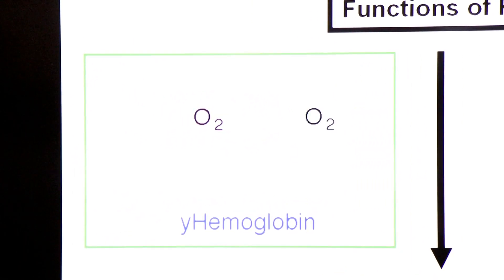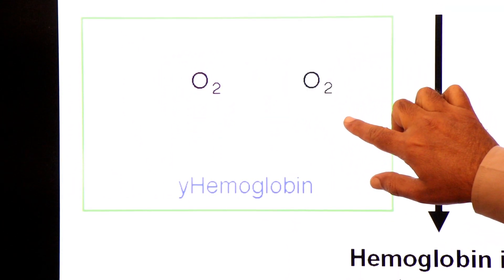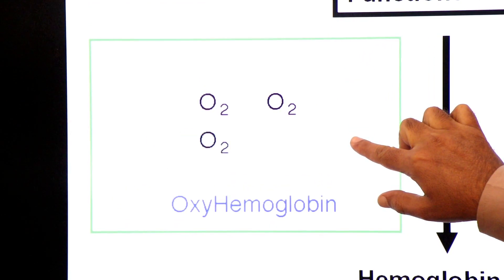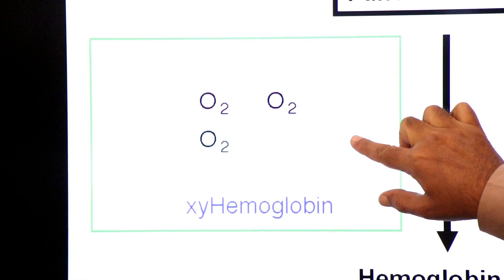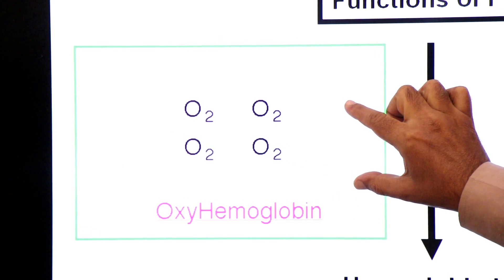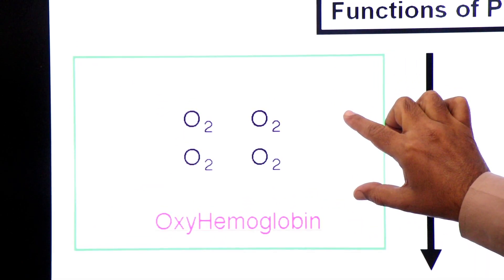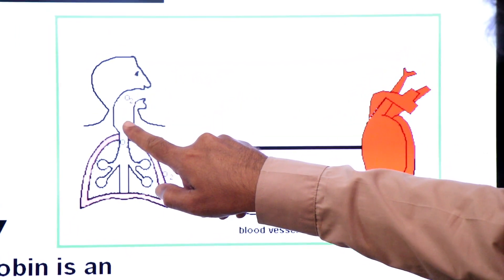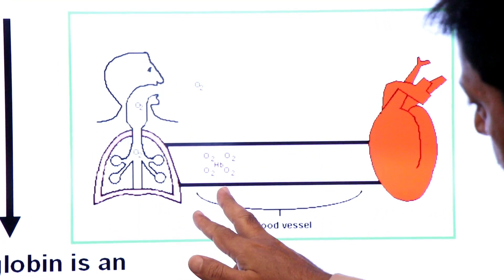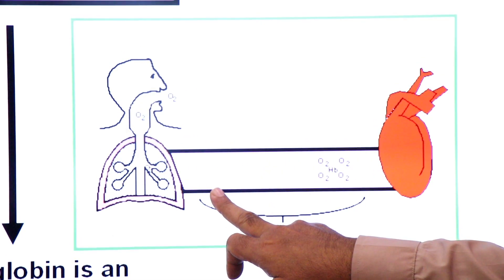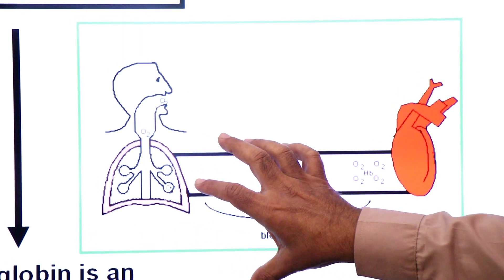Hemoglobin is an oxygen-transporting protein — it is a transport protein. When we inhale oxygen, our lungs diffuse oxygen into the blood. In the blood there is hemoglobin, and as oxygen diffuses into the blood, it combines with hemoglobin.